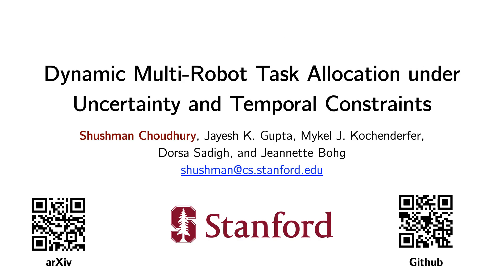In summary, we introduced a hierarchical multi-robot task allocation algorithm that accounts for uncertainty, time constraints, and new tasks arriving dynamically. Future work could look at stochasticity at the conflict level and lifting the assumption of known uncertainty models. Please see our extended version on arXiv and open source code as well. Thank you for your attention.